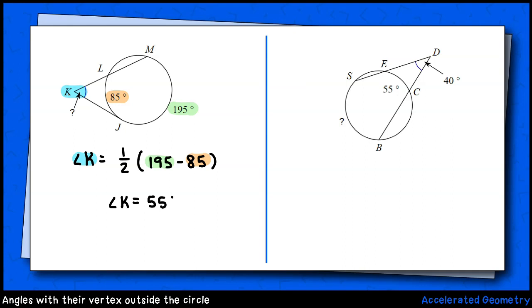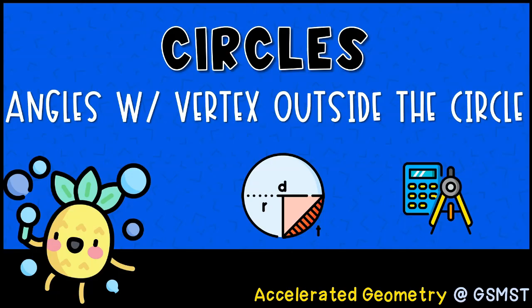On the right, we're given the angle outside of the circle and asked to solve for the missing arc. No problem. We have 40 equals one-half the missing arc minus 55. Let's multiply both sides of the equation by 2. Now I have 80 equals the missing arc minus 55. We'll add 55 to both sides of the equation. The missing arc will be 135 degrees.